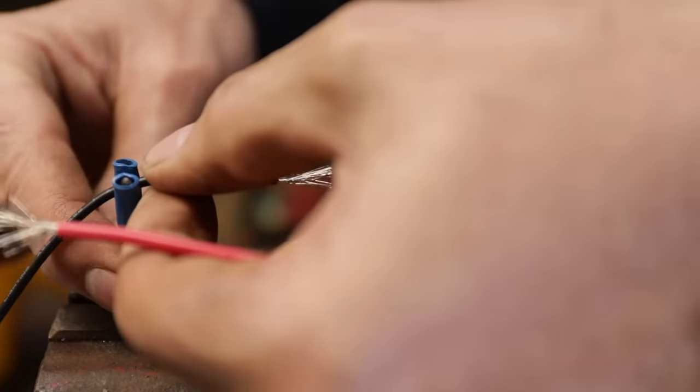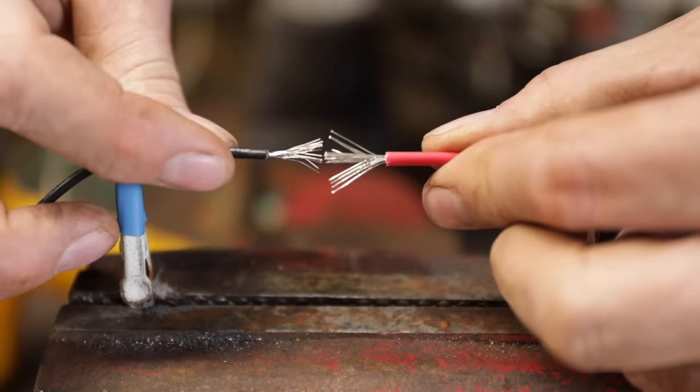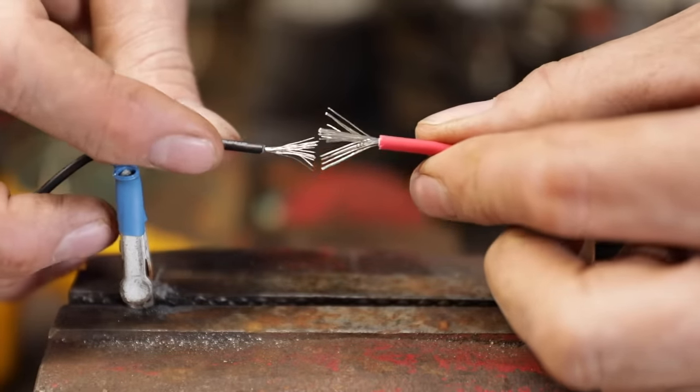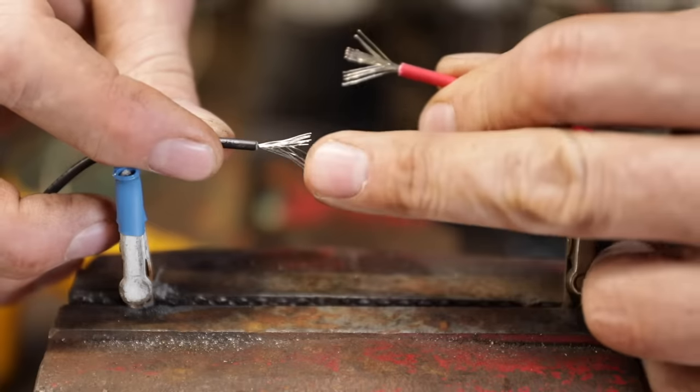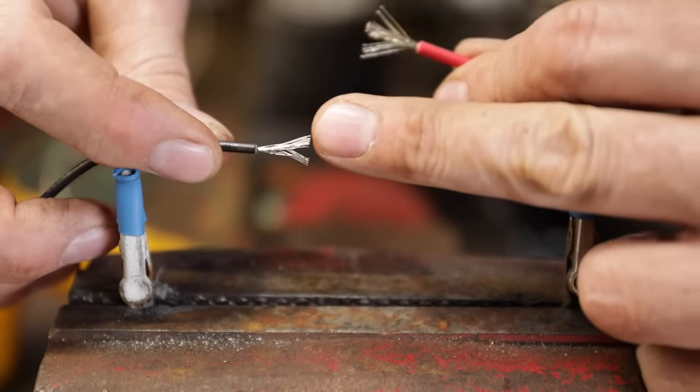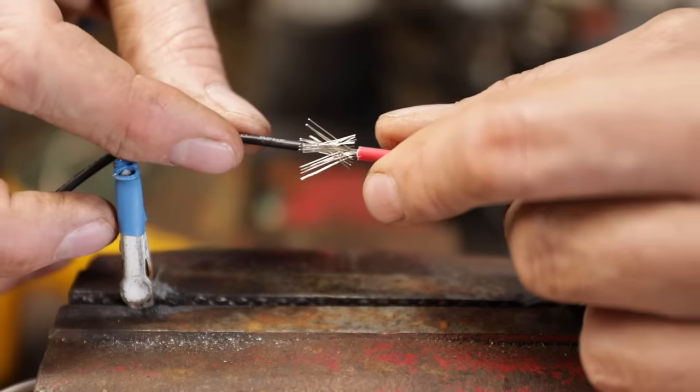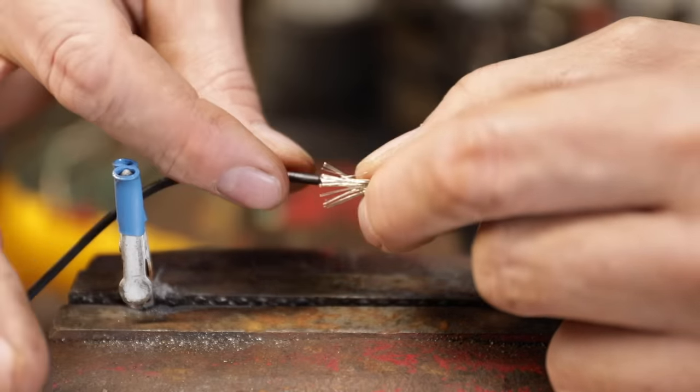For joining the wire, there's a couple different ways of doing it. But what I have found to be the best, and this is what my granddad always did, is you fray the ends of the wire like this. You kind of splay them out and join them so they intermingle, kind of mesh like fingers together.